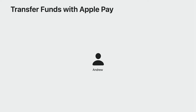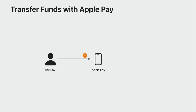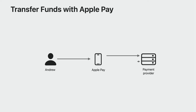Say we have a customer, Andrew, who wishes to withdraw money from their account. Using transfer funds with Apple Pay, they would trigger a transfer from within your app. Your app then creates a request outlining the amount to be transferred. Andrew will then be presented with the Apple Pay sheet detailing the transfer, allowing them to select the card they wish to receive funds to. Once Andrew securely authenticates the transfer, an encrypted payload is generated and returned to your app ready for processing with your payment provider. Once the transfer has been processed, your app returns the result to Apple Pay. If successful, that's it. If an error has occurred, Andrew would be informed and may be able to take corrective action.